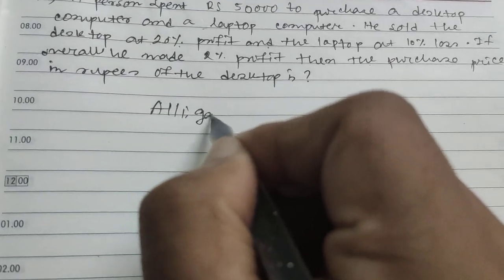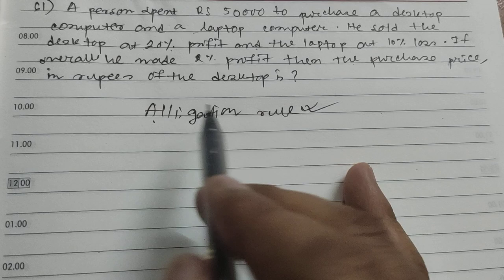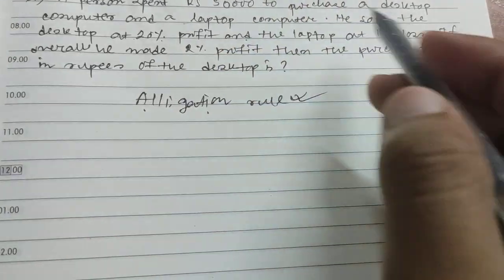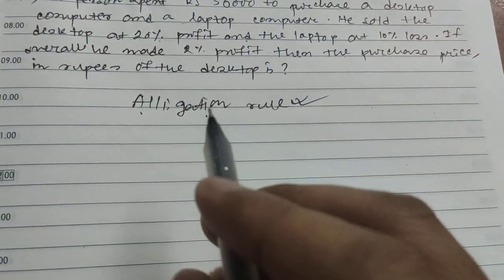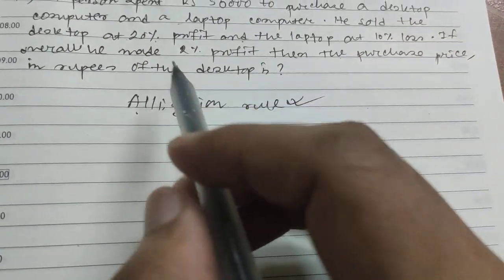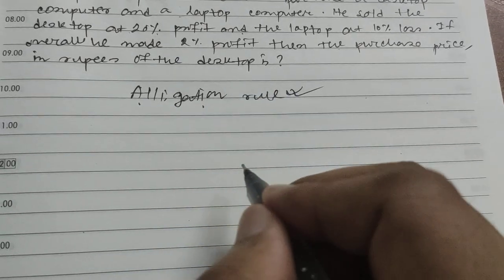Using the allegation rule, you can do these profit and loss questions very easily. We will put the ultimate profit in the center, so profit is 2 percent, which means plus 2.